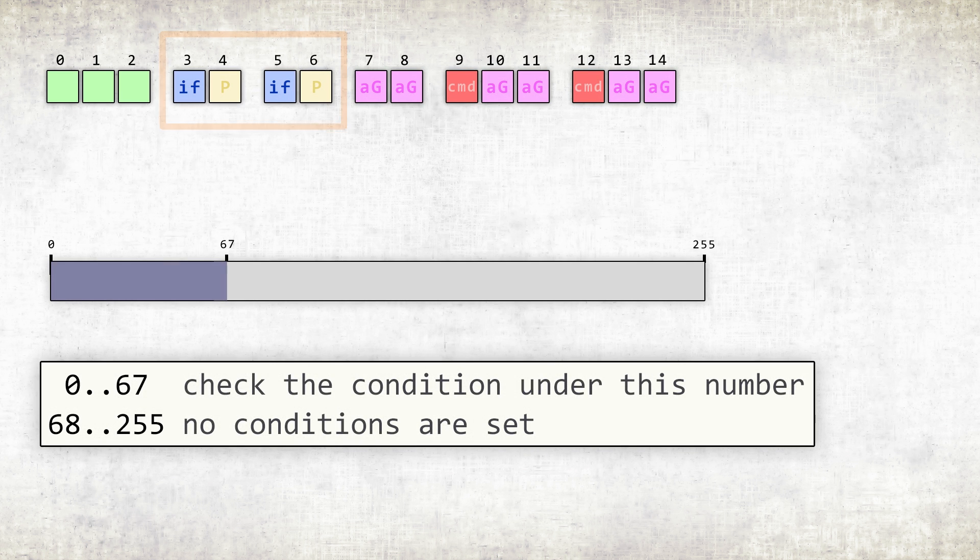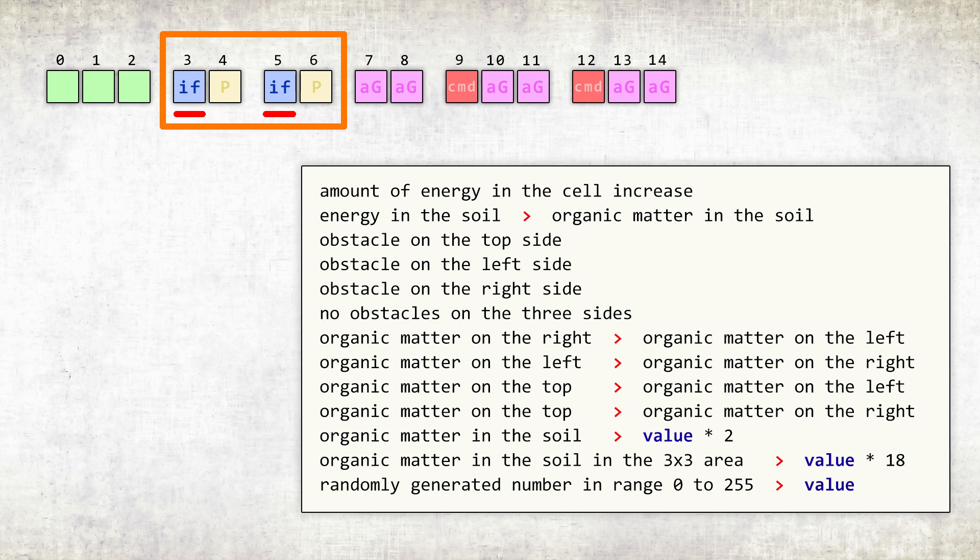The gene may also contain up to two conditions to be checked. If the third or fifth numbers fall within a certain range, we need to check the condition under those numbers. Here are some examples of such conditions. Some conditions require a parameter that is specified by the fourth and sixth numbers.